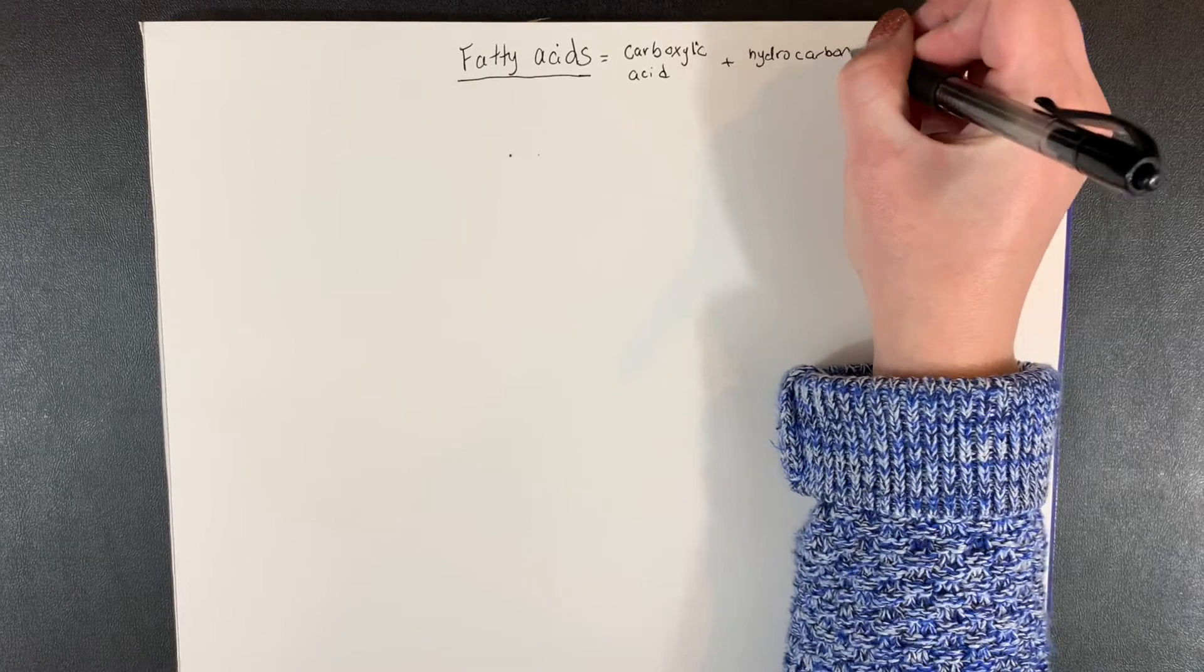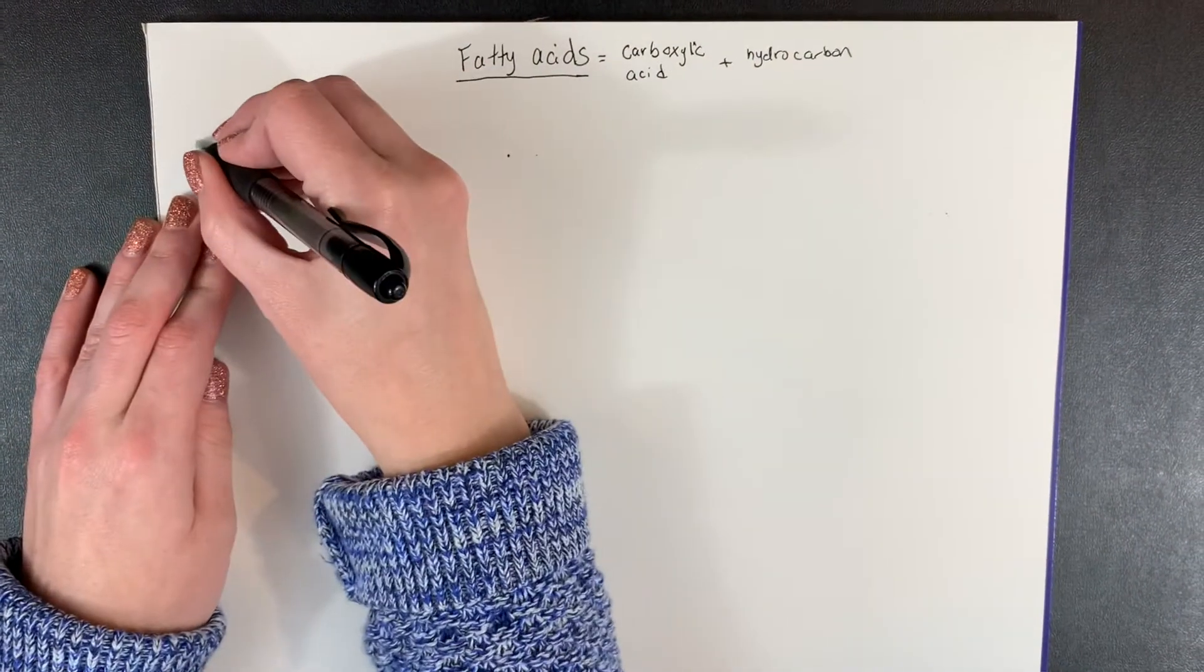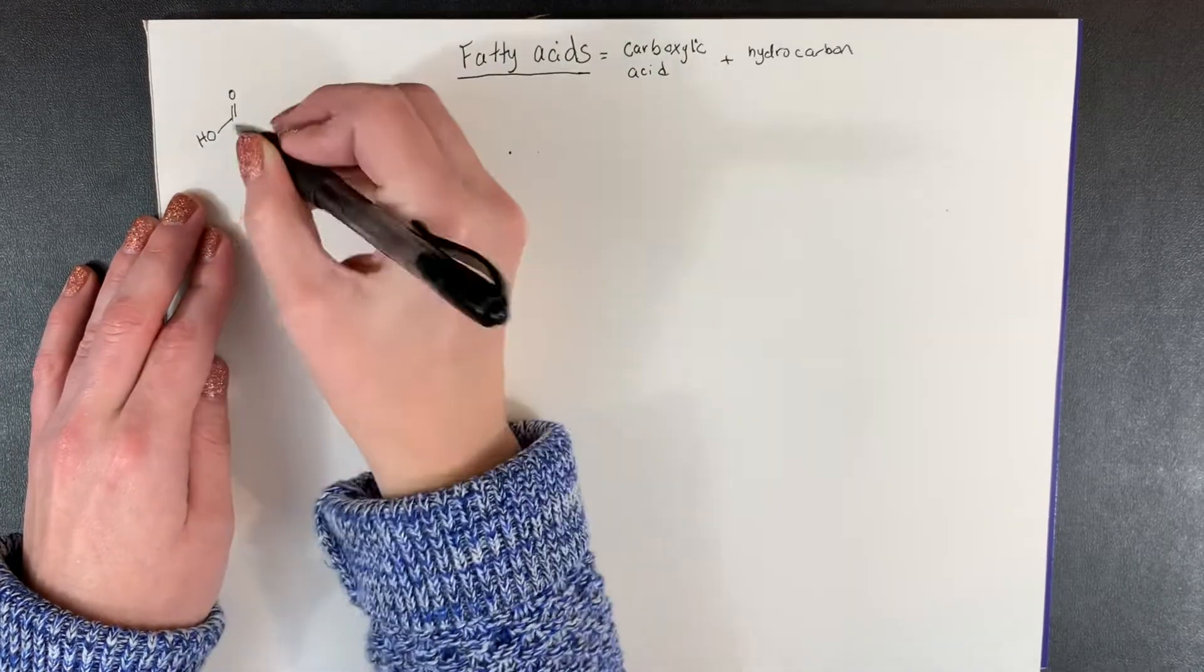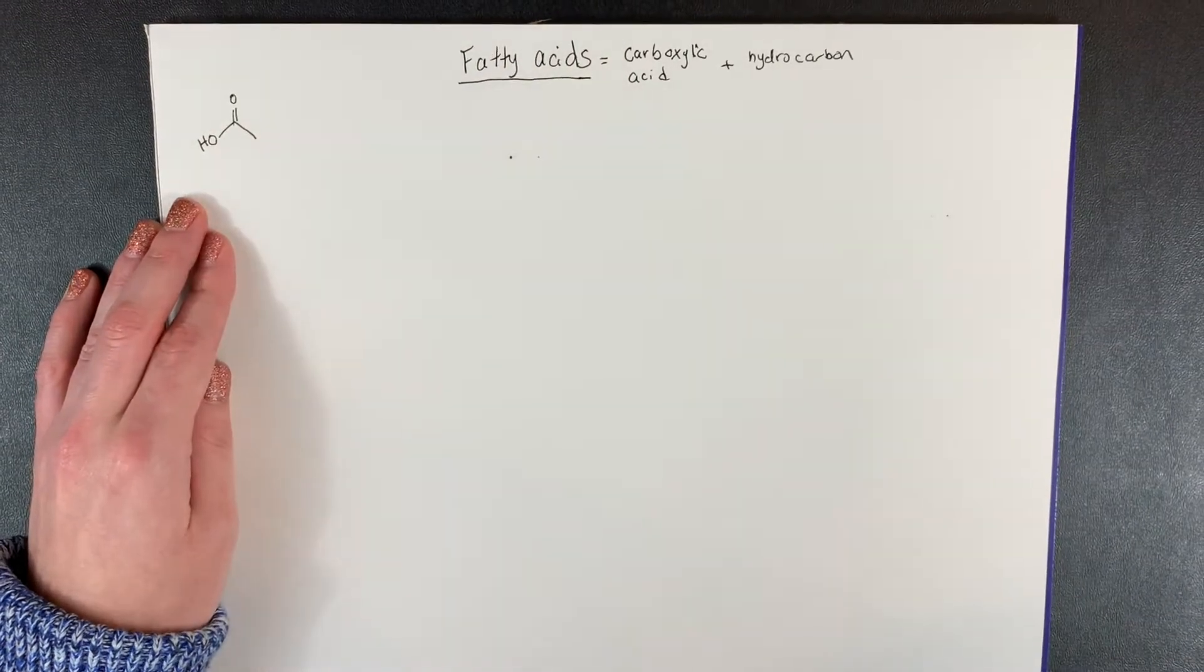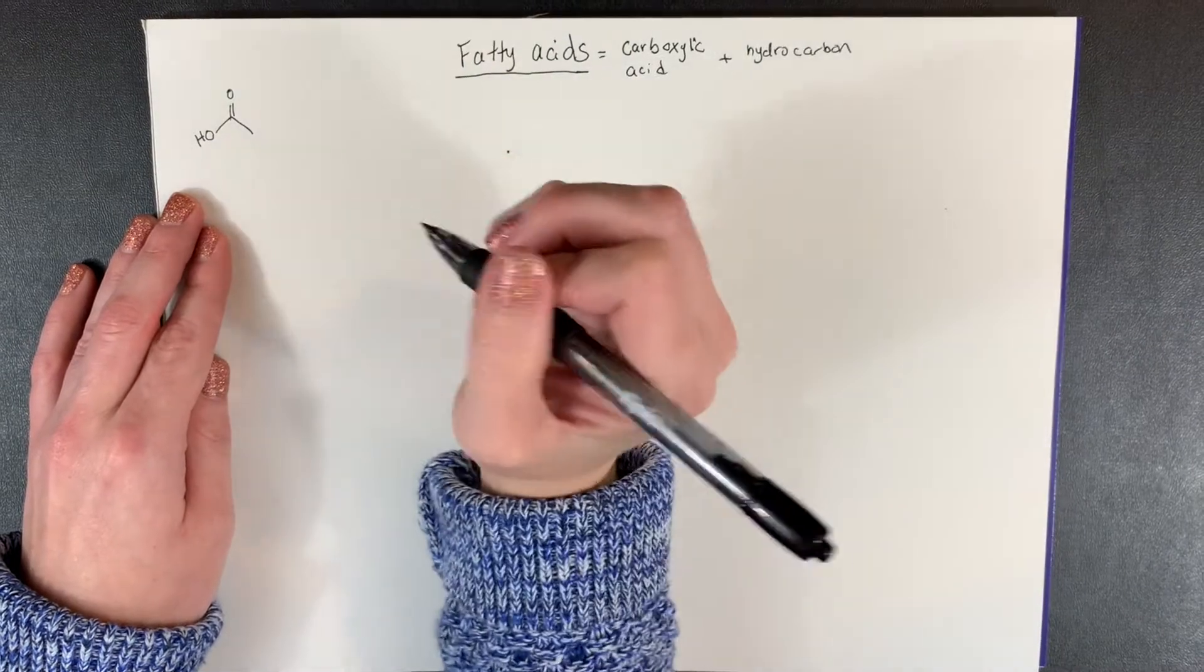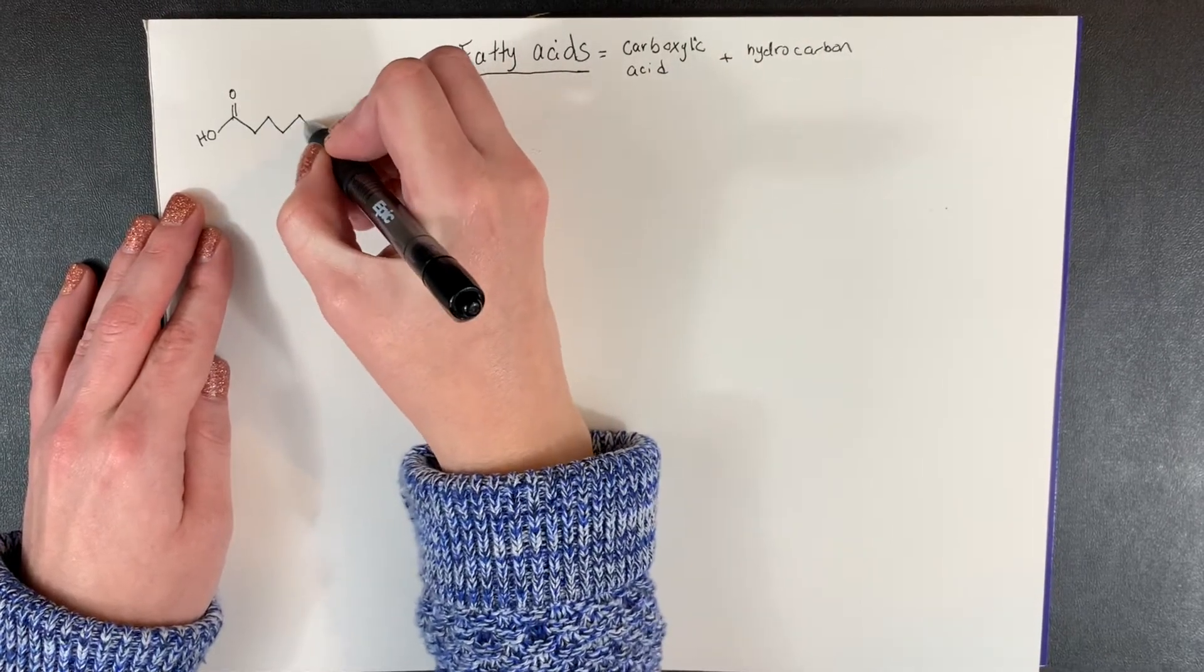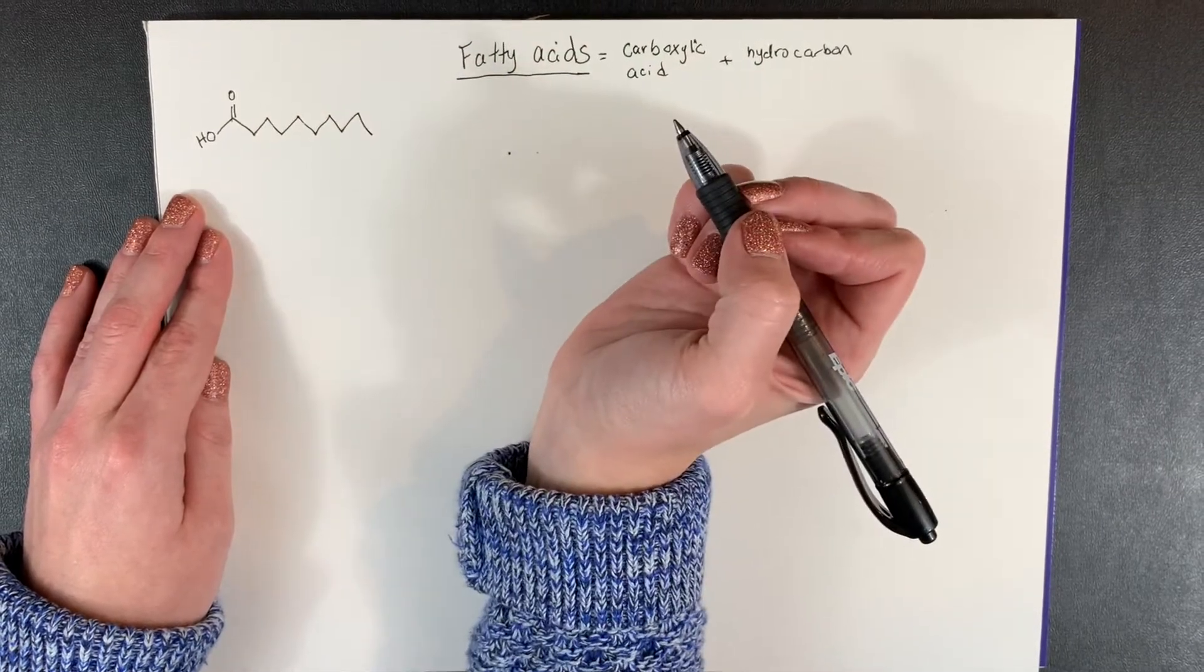So if we were just to draw a random fatty acid, it would look something like this. Now I'm hoping from OCHEM or general chem, you remember what a carboxylic acid group is. So it would look something like this is your carboxylic acid. Then all you need to do to make this into a fatty acid is add a hydrocarbon chain coming out this way. So there we go.